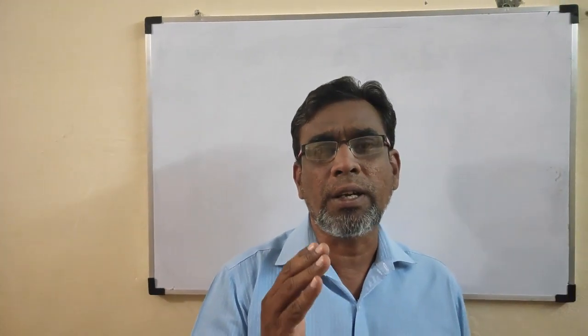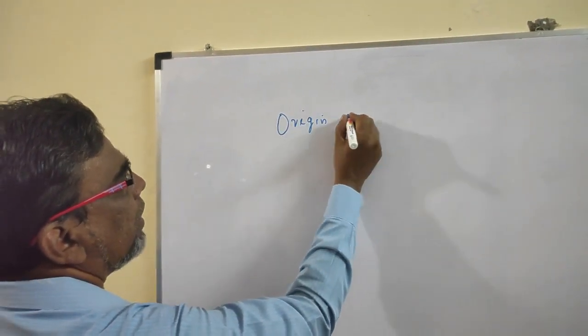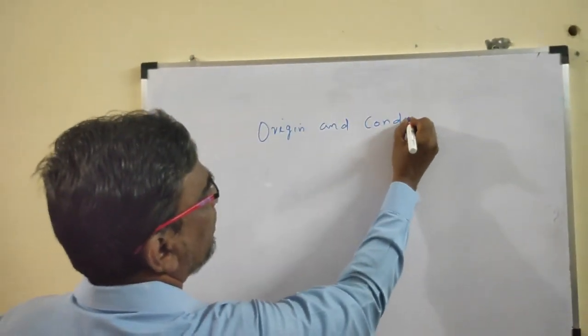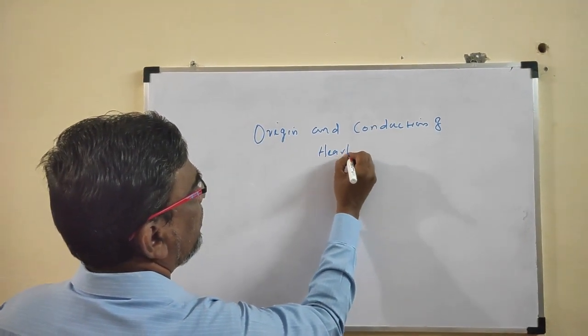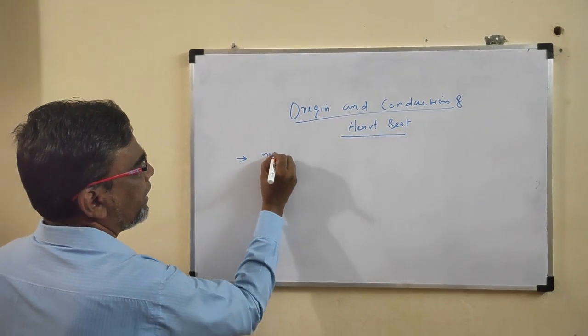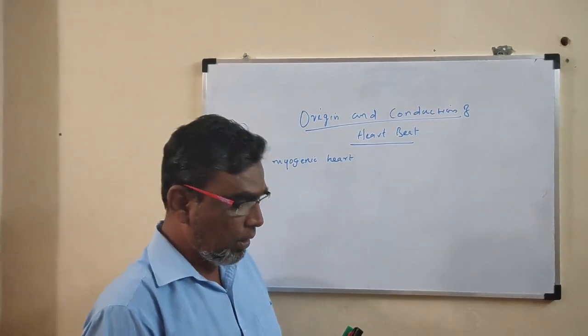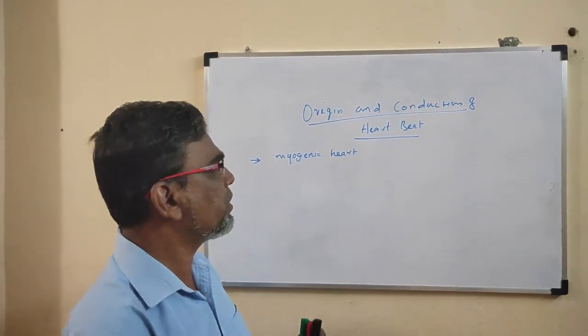In some animals, hearts are controlled by the neural system — those are called neurogenic hearts. But in our human heart, it is called a myogenic heart because the heartbeat is controlled by the heart muscles themselves. So the heart function is controlled by the heart muscle itself, not by the neural system.